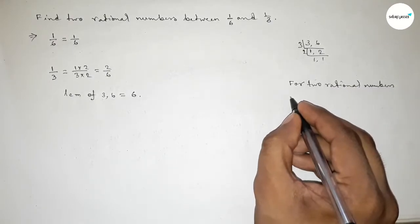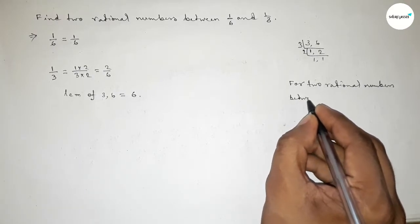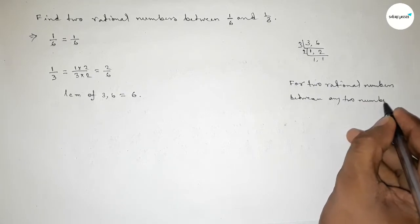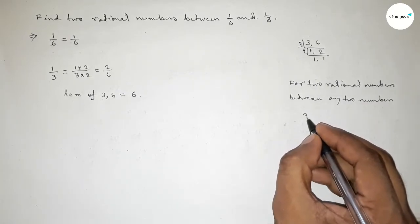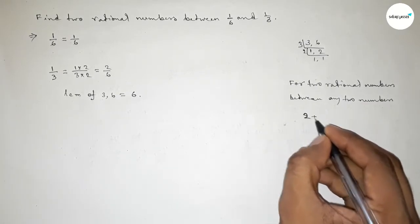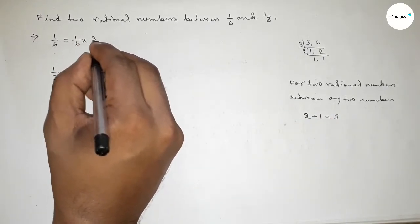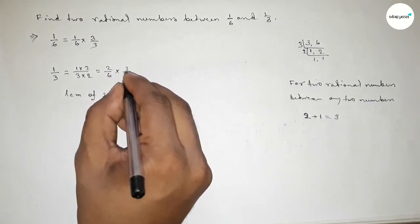So here the method is we should multiply both numbers by 2 plus 1. So 2 plus 1 equal to 3, so we should multiply both numbers by 3 by this way.